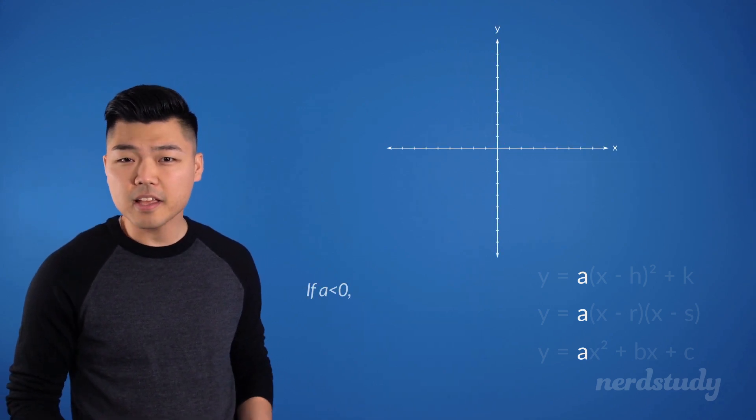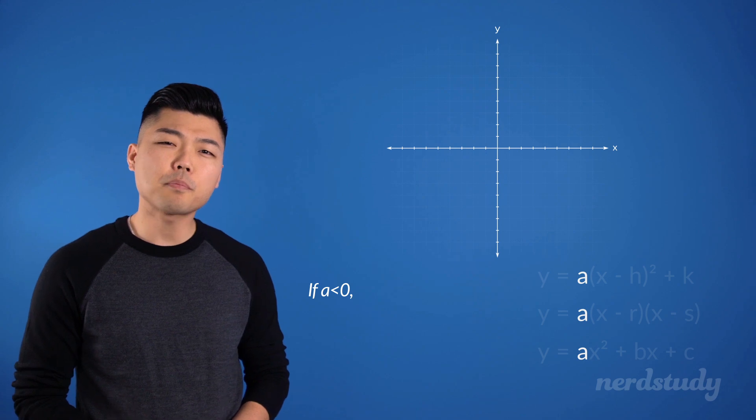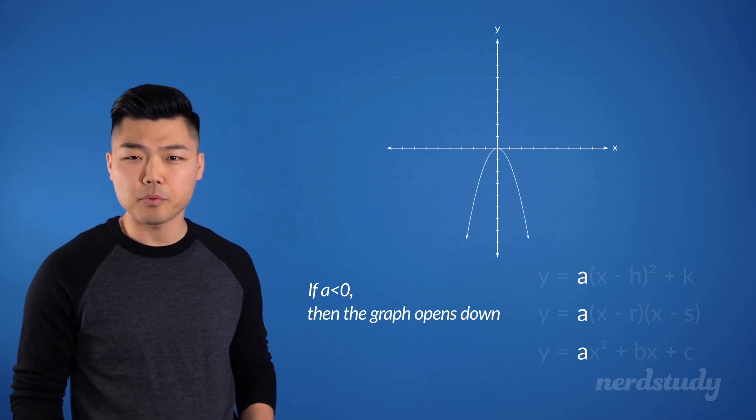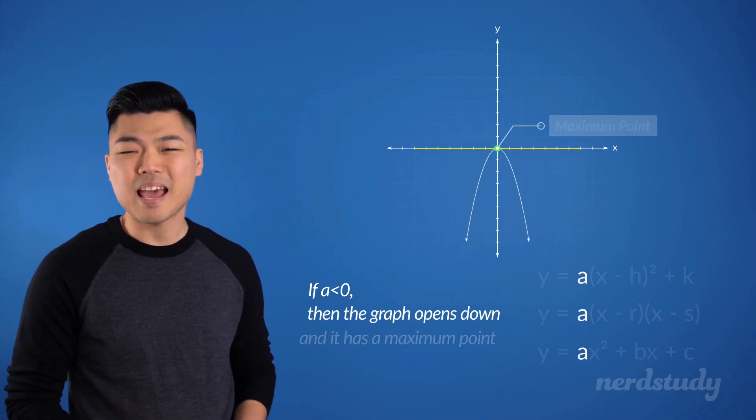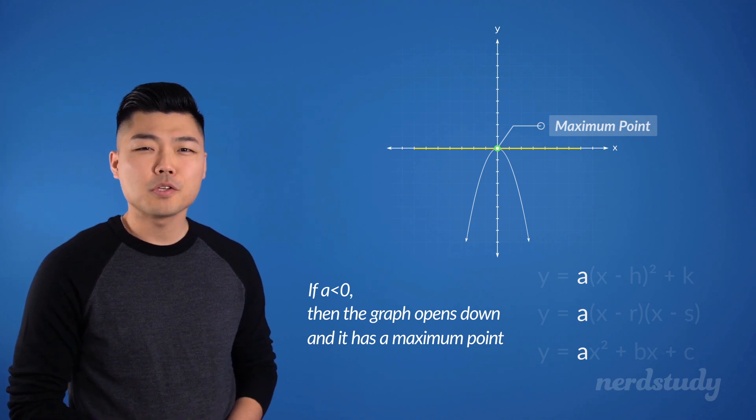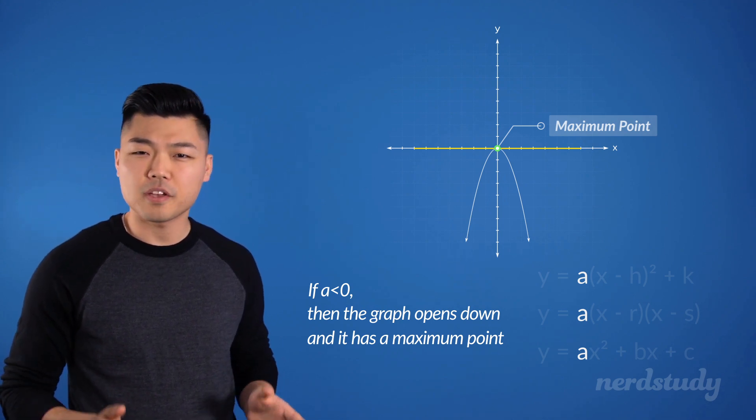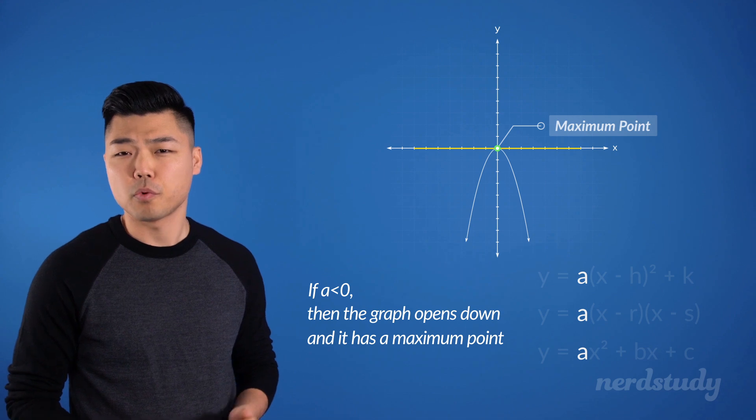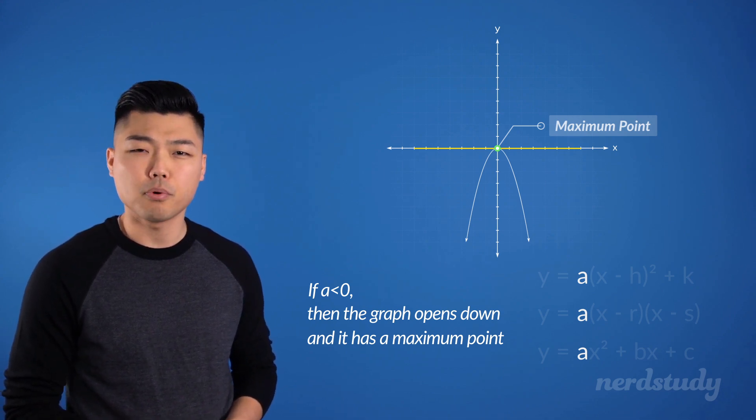If a is negative, however, then we know that the parabola is opening downwards and that there will be a maximum point. So what is a real life example of a situation where we might encounter a maximum point?